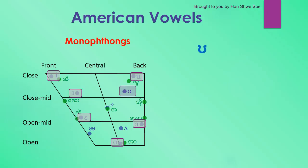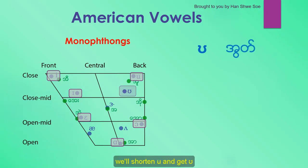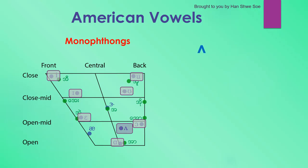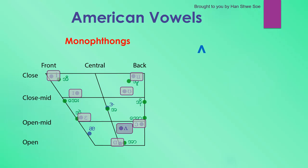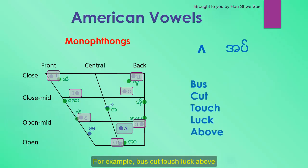The next monophthong is the same situation as the previous one — we'll shorten U to get the sound. For example: book, good, foot, could, push. The next one is quite near to R, but it's pronounced really short. We can use A. For example: bus, cut, touch, luck, above.